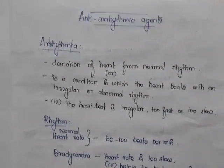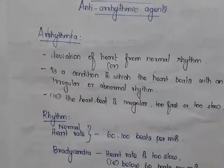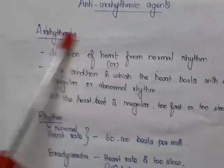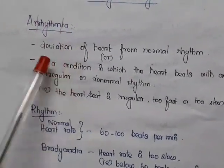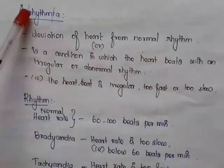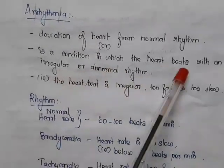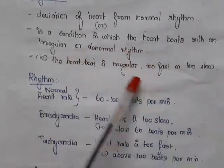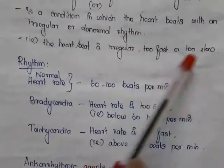Today we'll see about anti-arrhythmic agents. First, we'll see what is meant by arrhythmia. Arrhythmia is an abnormality in rhythm — it is a deviation of the heart from normal rhythm. It is a condition in which the heart beats with an irregular or abnormal rhythm, which may be too fast or too slow.